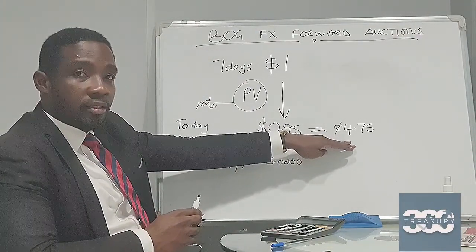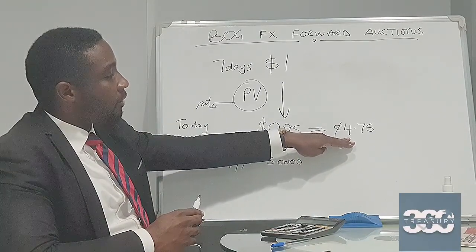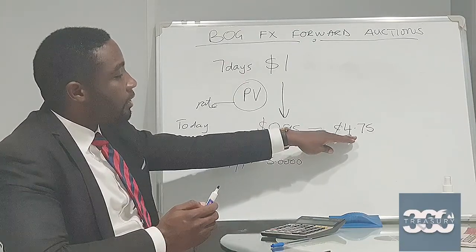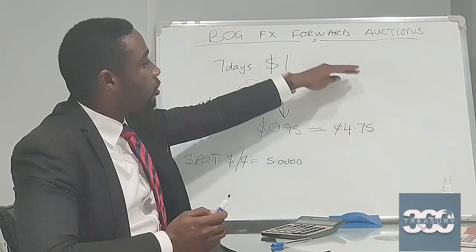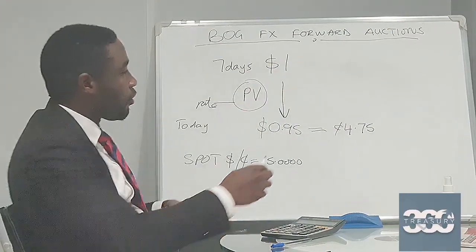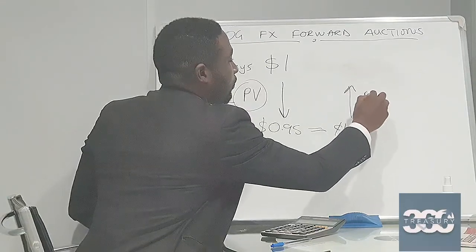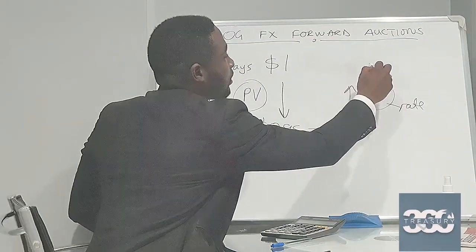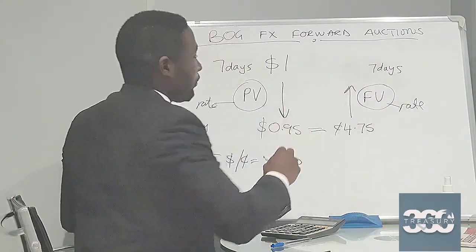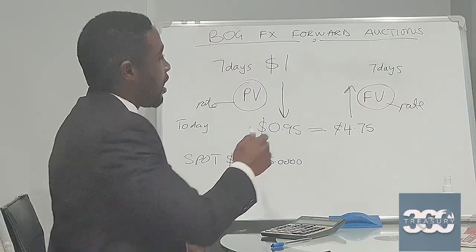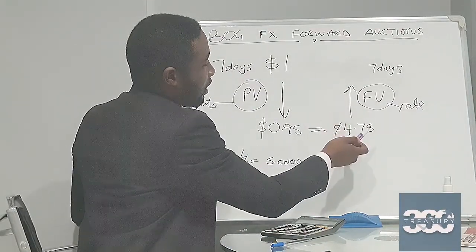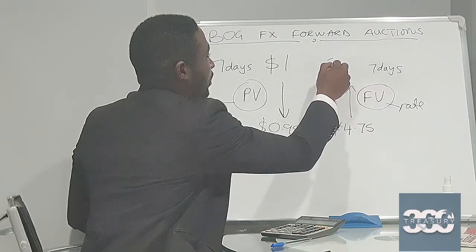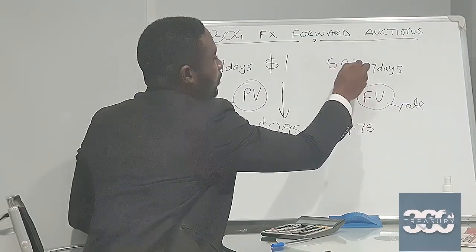If I have 4.75 GHS, I need to know how much I would get if I invest 4.75 GHS in this market for seven days. If I invest 4.75 GHS at a certain rate, how much would it mature to in seven days' time? What I will do is future value this — also at a rate for seven days. So in seven days' time, investing 4.75 GHS at a certain rate, I arrive at five GHS.